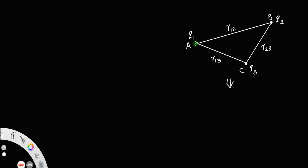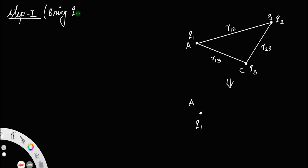First, bring the charge q1 to the point A — that is step 1. In that case, you do not have to do any work because there is no external charge near q1 and there is no external field in this region. So the work done, W1, will be 0.